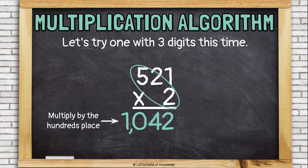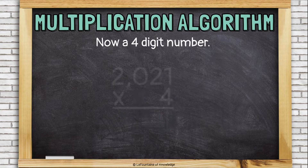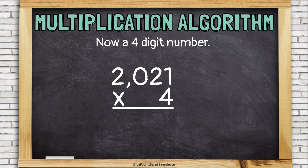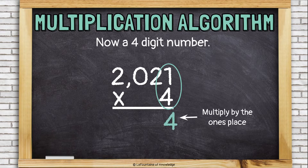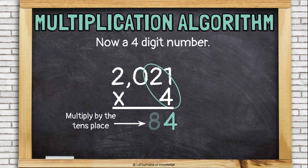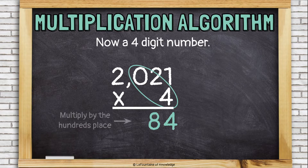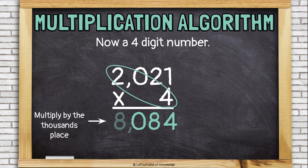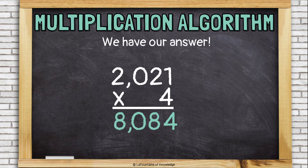I multiplied that bottom number by each of the digits in the top number. Now, let's try one with four digits. 2,021 times 4. Same thing. I'm going to multiply times the ones, times the tens, times the hundreds. And then this time, I'll also need to multiply my 4 times the thousands. So let's start in the ones place. 4 times 1 is 4. 4 times 2 is 8. 4 times 0 is 0. And 4 times 2 is 8. We have our answer, 8,084.